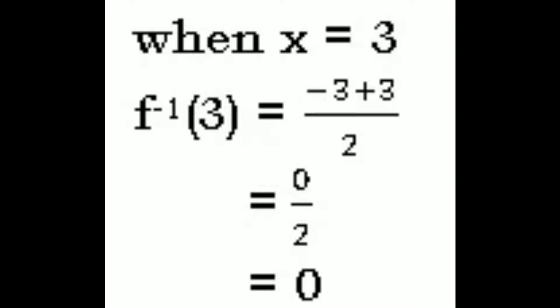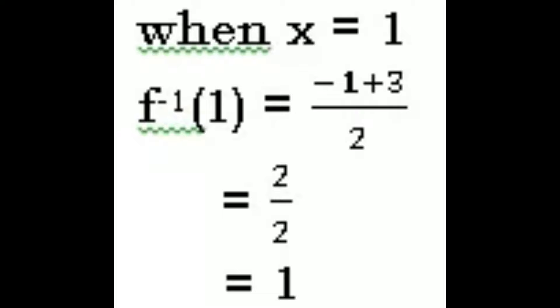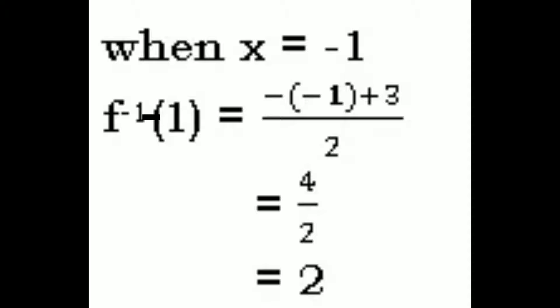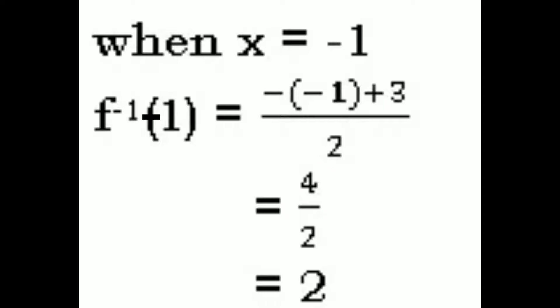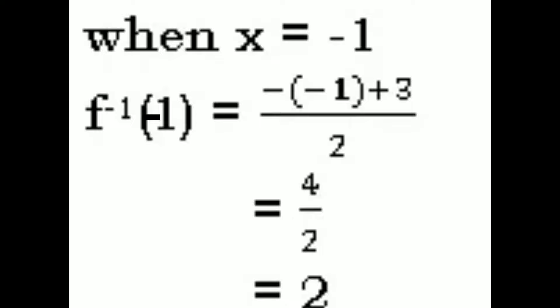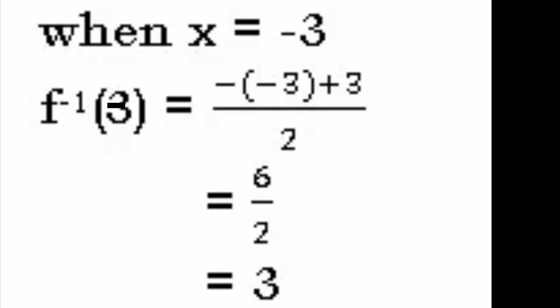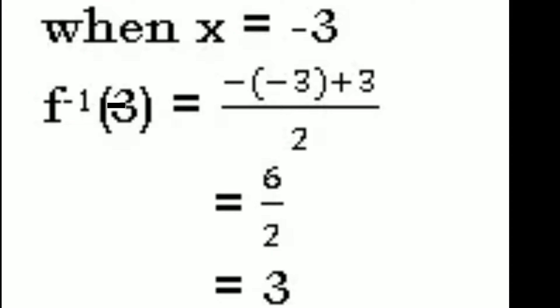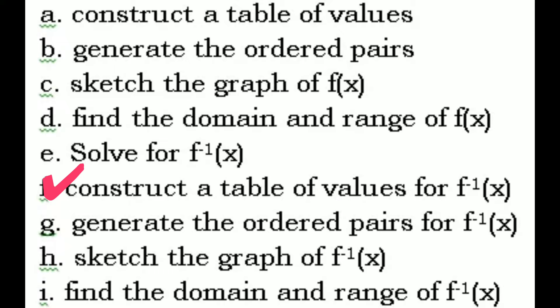When x = -1, f⁻¹(-1) = (-(-1)+3)/2 = (1+3)/2 = 4/2 = 2. When x = -3, f⁻¹(-3) = (-(-3)+3)/2 = (3+3)/2 = 6/2 = 3. We're done with Letter F. Let's go to Letter G: generate the ordered pairs for f inverse of x. The ordered pairs are: (9,-3), (7,-2), (5,-1), (3,0), (1,1), (-1,2), (-3,3) — we just interchange the x and y values.